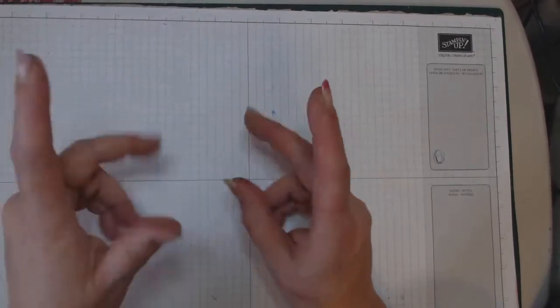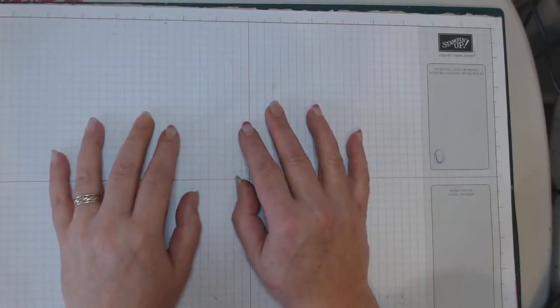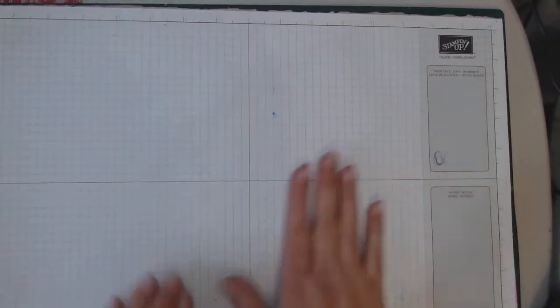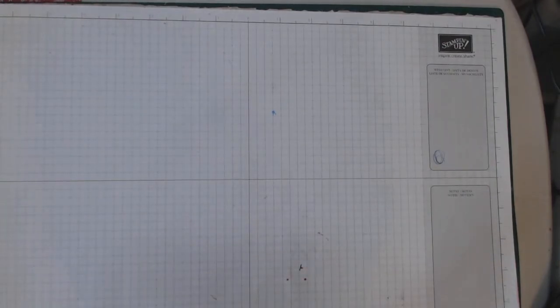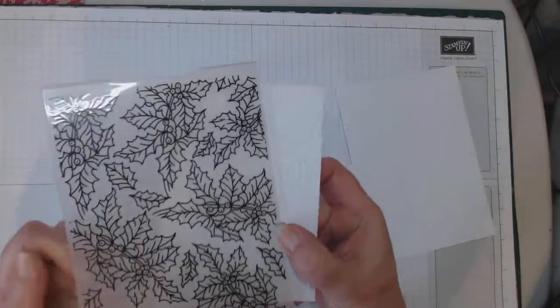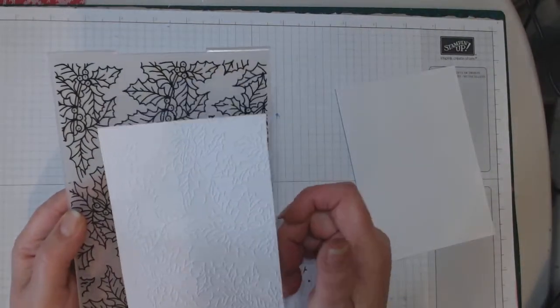Hi everybody and welcome back to Crafting with Gordy. Today we're going to make a card together, a wreath card. I don't know if it'll work out because I haven't done one. You will need a piece of cardstock three and five eighths by eight and a quarter, scored at four and an eighth. I've already embossed mine using this embossing folder.